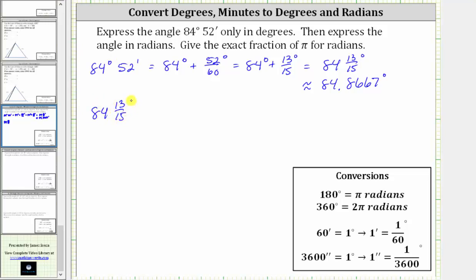let's write this as an improper fraction, where the denominator is going to remain 15, and the numerator is going to be 15 times 84 plus the numerator of 13, and of course the units are still degrees.